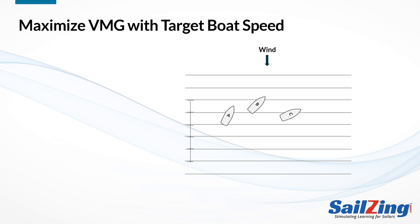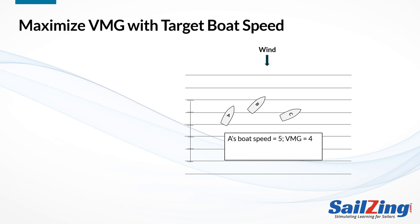Keel boats use instruments to maximize VMG by sailing at what we call target boat speeds. Small boat sailors don't have instruments, but we can learn from the concept of target boat speeds. To understand target boat speed, let's review our previous examples. Remember that Boat A, which sailed closest to the wind, had a boat speed of 5 and a VMG of 4. Boat B sailed at 45 degrees to the wind and had a boat speed of 7 and a VMG of 5. Boat C footed off and had a boat speed of 8 and a VMG of 4.